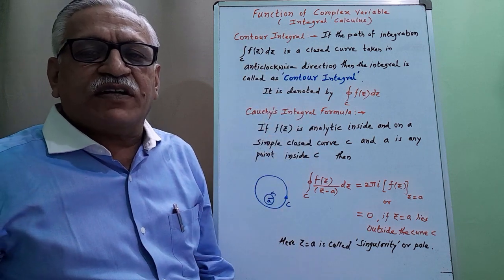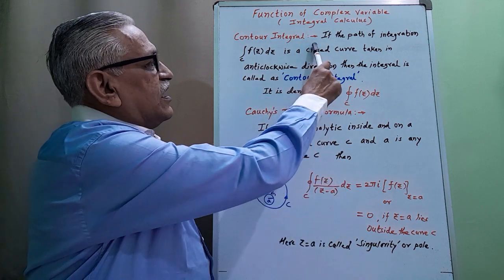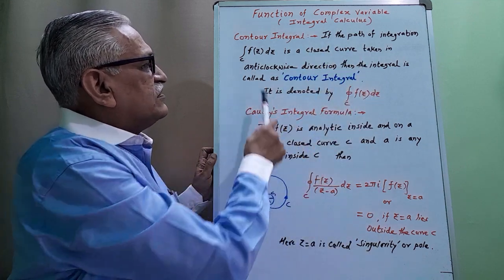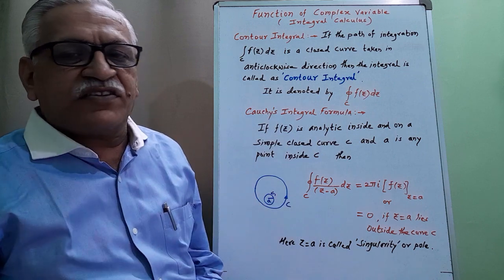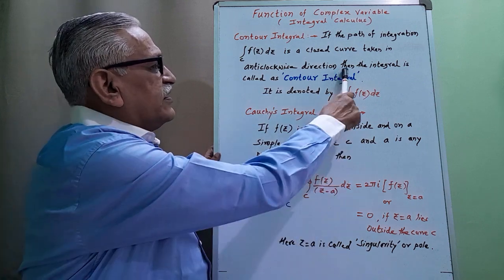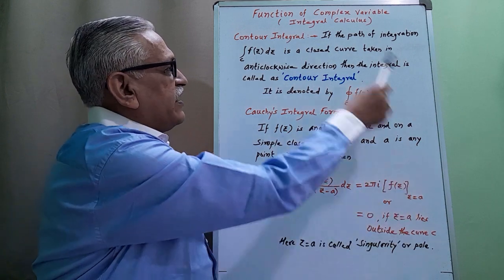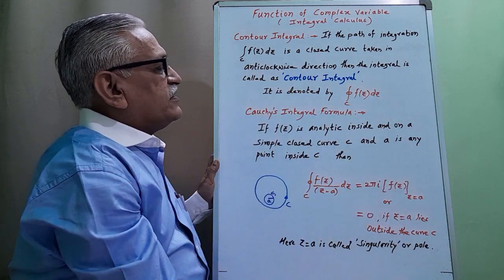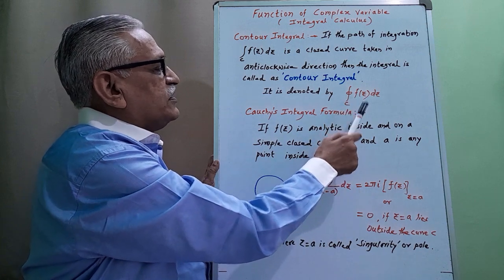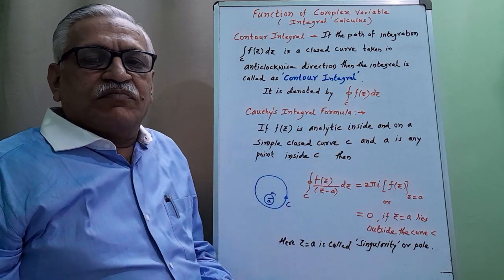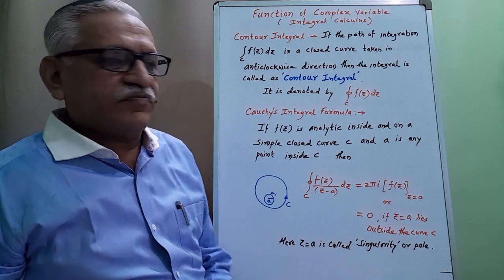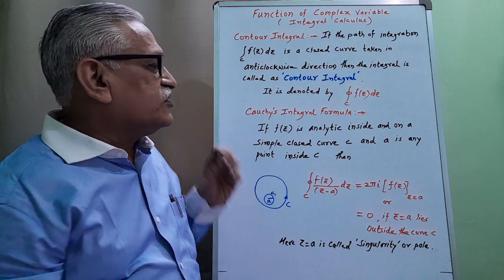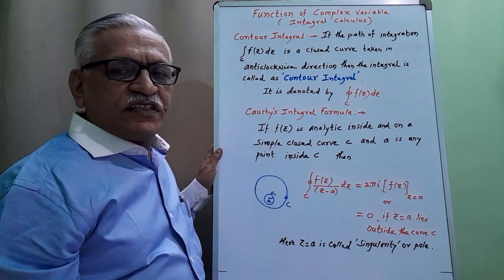First of all, I will discuss what is the contour integral. If the path of integration is a closed curve taken in anticlockwise direction, then that integral is called a contour integral. It is denoted by the integration of f(z) dz over closed curve C. This symbol means it is a closed curve. Then one theorem on this contour integral — that is Cauchy's integral formula.